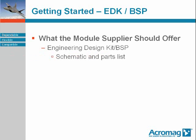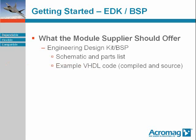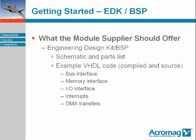This includes such things as the schematic and parts list, the example VHDL code — both compiled and source — for such implementations as the bus interface, the memory interface, the IO interface, the interrupt system, and DMA transfers. It is also valuable that you should have all of the pin definitions for the FPGA module, the FPGA device, and all of the components on the board.